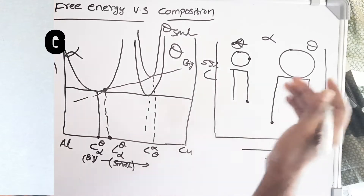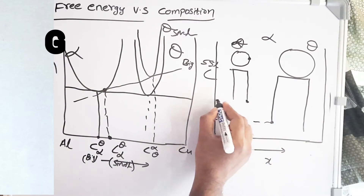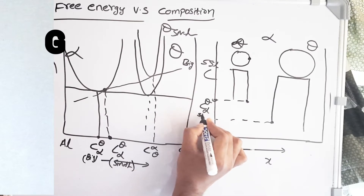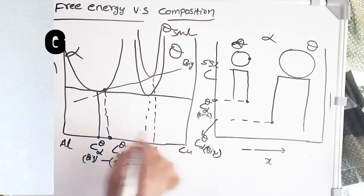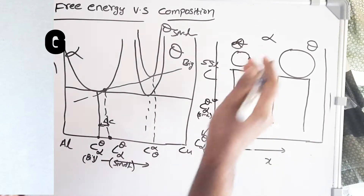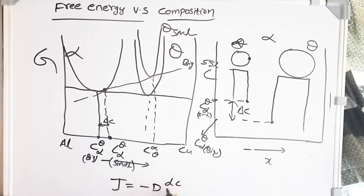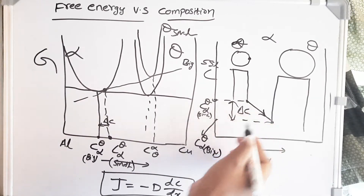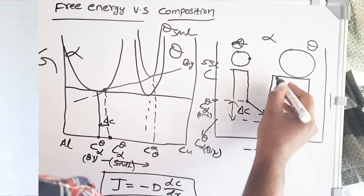This point represents the composition of the bigger precipitate in equilibrium with alpha. We already noted that this point is the composition of alpha in equilibrium with theta smaller, and this point is the composition of alpha in equilibrium with theta bigger. This gives us delta C — a concentration difference. Because of this concentration difference, we get a concentration gradient, and therefore a diffusion flux of minus D times dC/dx. There is a clear driving force from the smaller precipitate to the bigger precipitate.